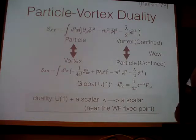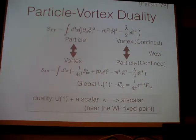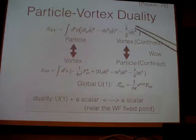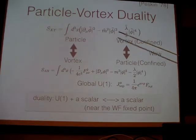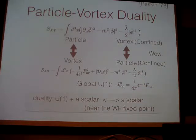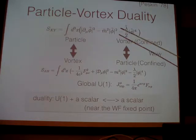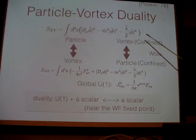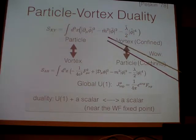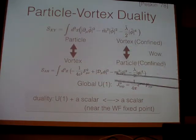One of the fascinating dualities in 3D is called particle-vortex duality. One side of the theory is just a complex scalar with potential, and the other side is a complex scalar with potential plus a gauge field, a photon. People claim those are the same theory. If you look at the degrees of freedom, on one side you have a global U(1) symmetry where phi has charge one. On the other side that symmetry is gauged, so there's no global symmetry — it looks like it doesn't match. But actually there's a topological U(1) symmetry on that side, where the charge is actually a magnetic charge.